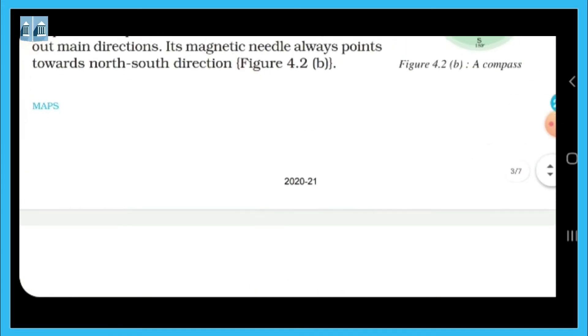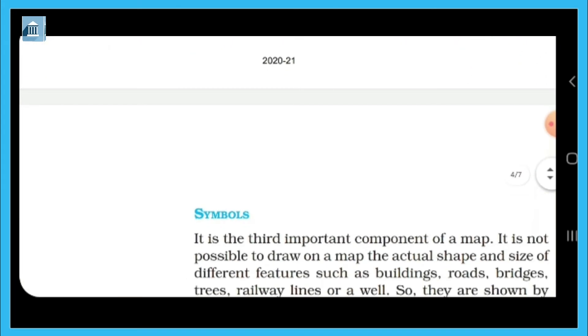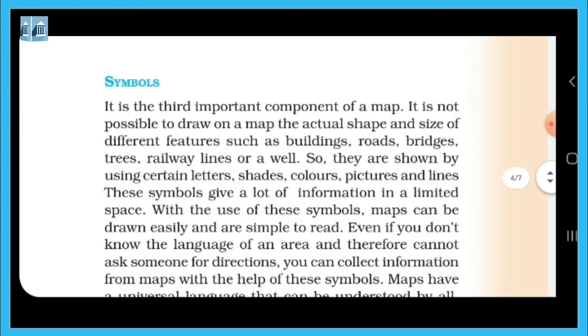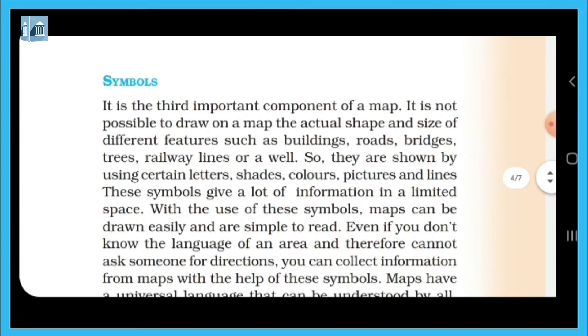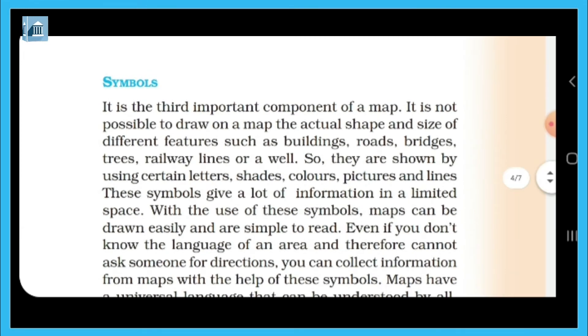Now, symbols. Symbols are the third important component of the map. It is not possible to draw the actual shape and size of features on a map.